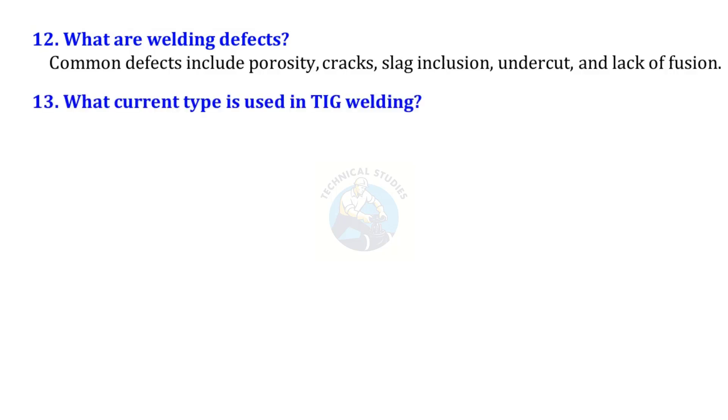What current type is used in TIG welding? Usually DC for steels and AC for aluminum.